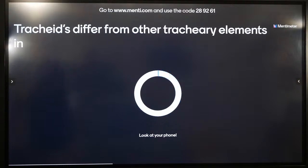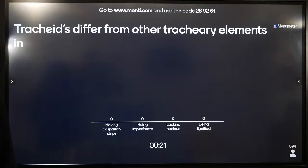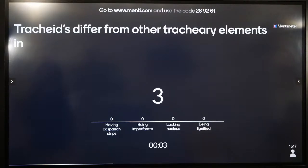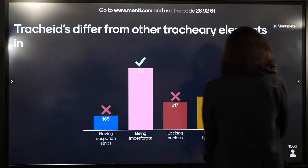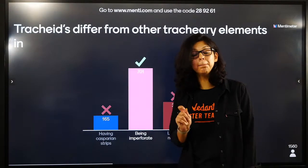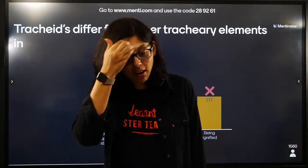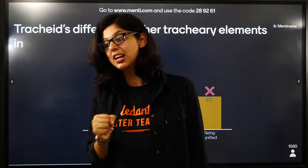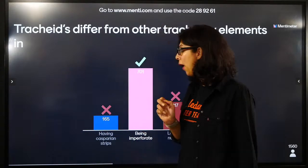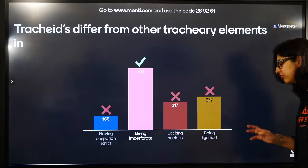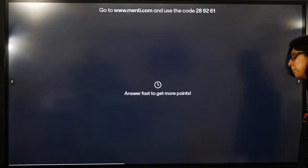Tracheids differ from other tracheary elements. Options: having Casparian strip, being imperforate, lacking nucleus, or being lignified. Imperforate means having no perforations. They will be lignified to transport - they do not lack nucleus. Tracheids are imperforate - they don't have perforations. Both tracheids and vessel elements lack nucleus, both have Casparian strips, both are lignified, but tracheids are imperforate.